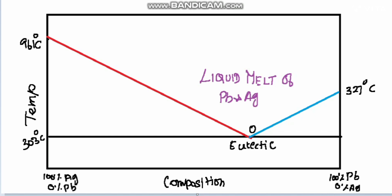The number of phases in the liquid area is one, so we apply the condensed phase rule: F = C − P + 1, not plus 2, because the pressure term is eliminated since there is no vapor phase. So F = C − P + 1, where the number of components C = 2 and the number of phases P = 1, giving F = 2 − 1 + 1 = 2. The system is bivariant in this area.